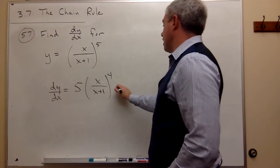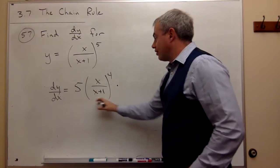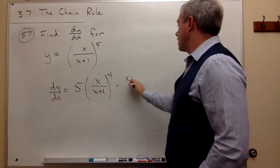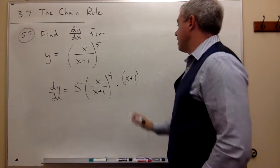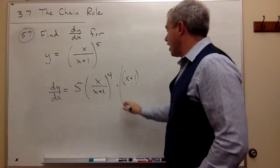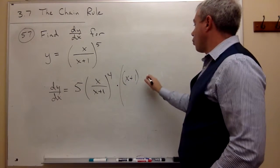And the quotient rule tells me I should multiply by, right down the bottom first, x plus 1, times the derivative of what's on top. The derivative of x is 1.